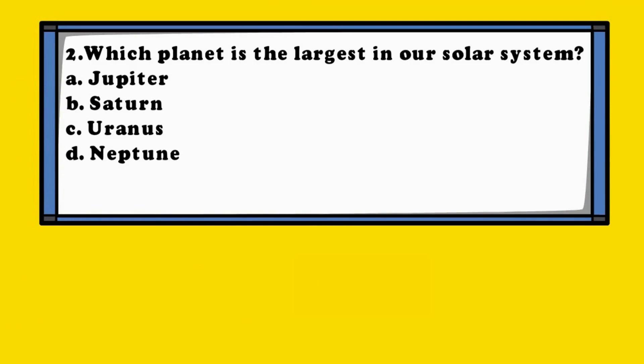Question 2. Which planet is the largest in our solar system? A. Jupiter, B. Saturn, C. Uranus, D. Neptune.